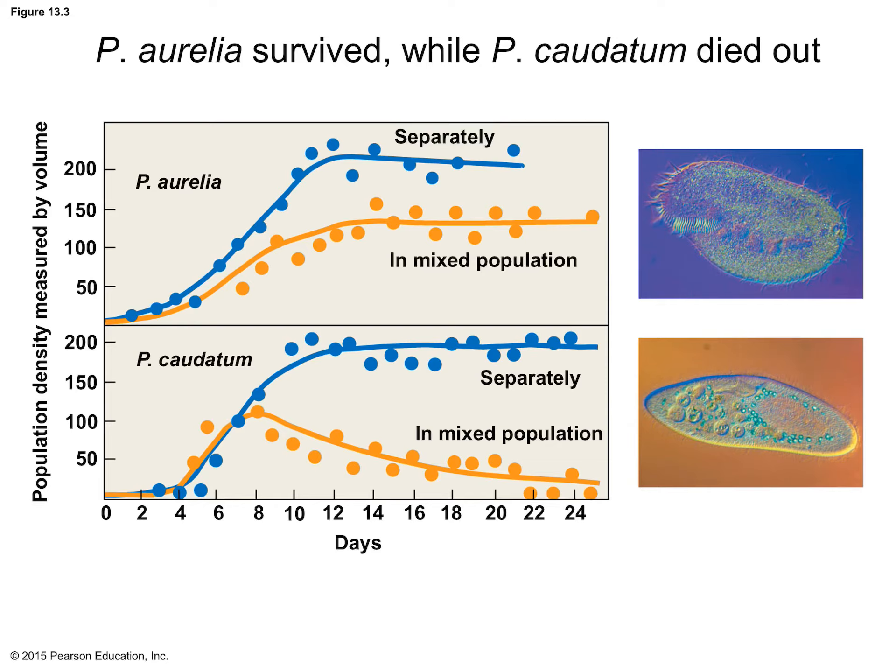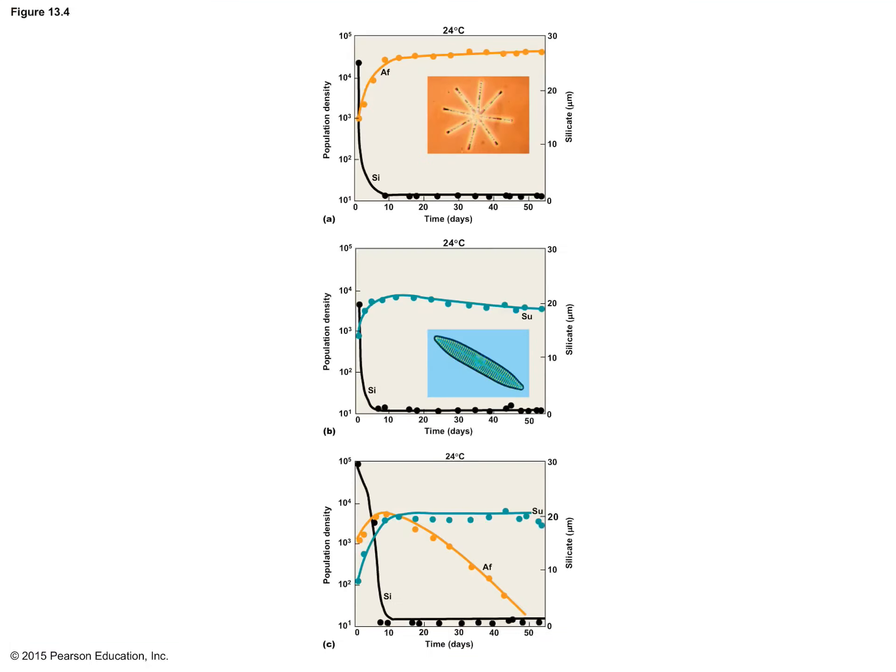A biologist named David Tilman investigated competition between diatoms — Asterionella formosa and Synedra ulna. Both of these diatoms require silica in their environment to form their cell walls. The population growth and decline were monitored over time, as well as the level of silica in the water. When grown separately with silica continually added, both species kept silica at a low level, meaning they were taking it up and using it. When grown together, silica used by S. ulna reduced the concentration below that needed by A. formosa for survival and reproduction, and so A. formosa was driven to extinction.